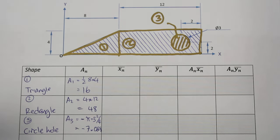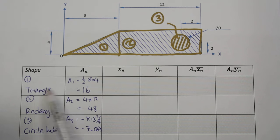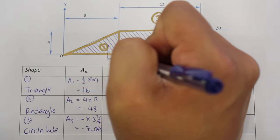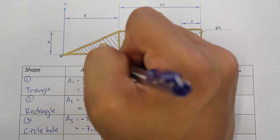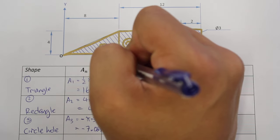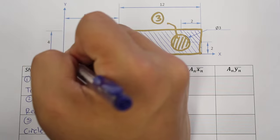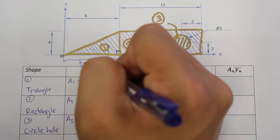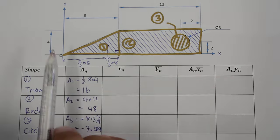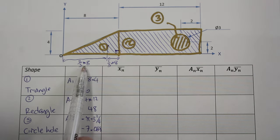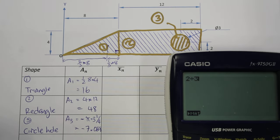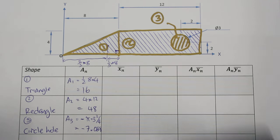We now calculate the coordinates of the centroids for those shapes. For shape number one, the centroid of a triangle is at one-third of the distance from the right-angle side, which means two-thirds from the origin. So x̄₁ equals two-thirds times eight, which we calculate as approximately 5.33.